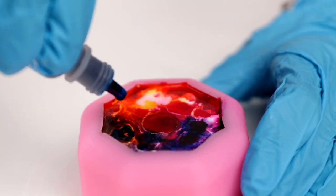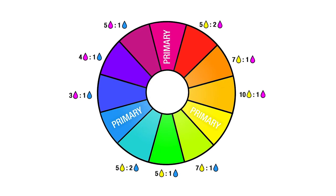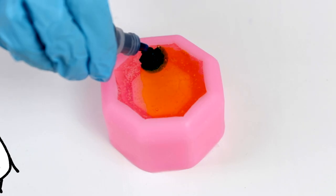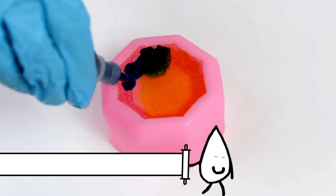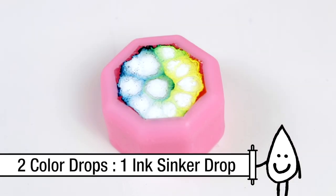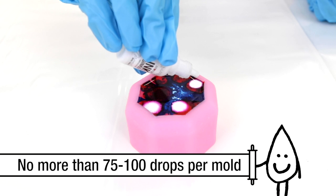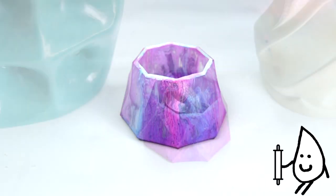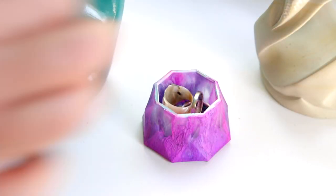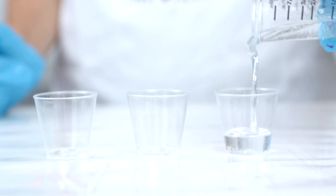With the three primary colors provided, there's no limit to the custom colors you can create. A good ratio to go by is two color drops to one ink sinker drop, and it's best to aim for no more than 75 to 100 drops per mold so that the resin cure can still happen as planned. Feel free to get creative with your techniques to achieve a variety of results.